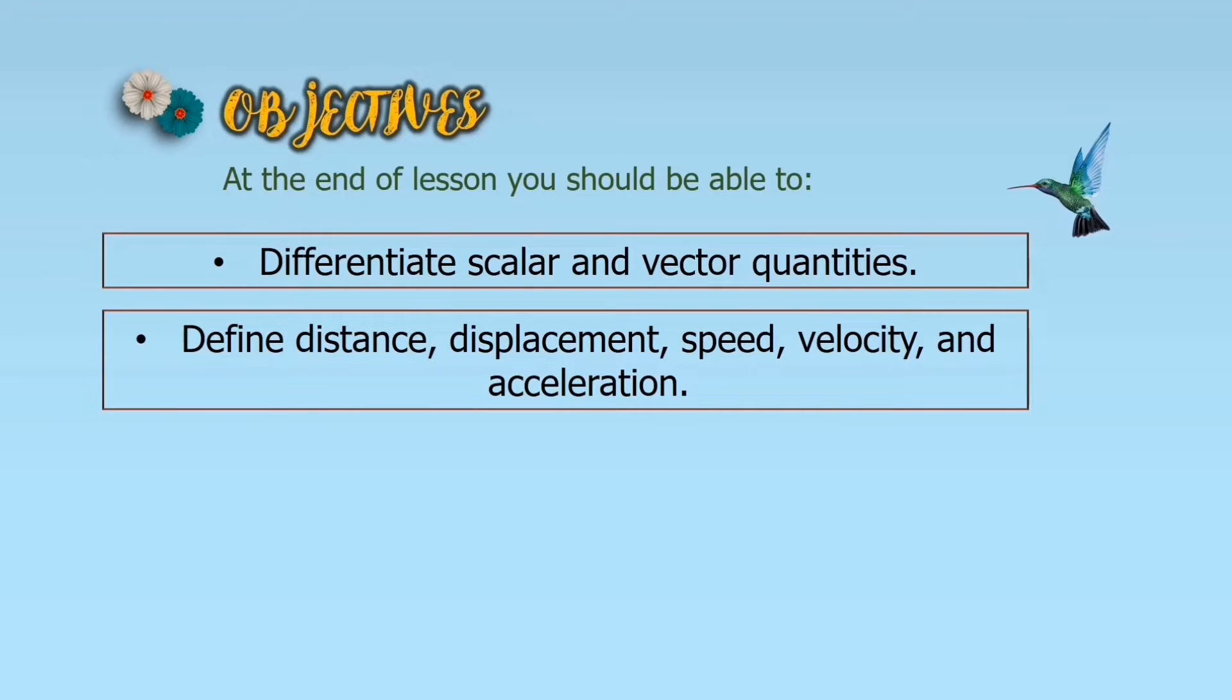Our topic is all about describing motion and motion detectors. Before we discuss our topic, let us have our lesson objectives. At the end of the lesson, you should be able to differentiate scalar and vector quantities and define distance, displacement, speed, velocity, and acceleration.